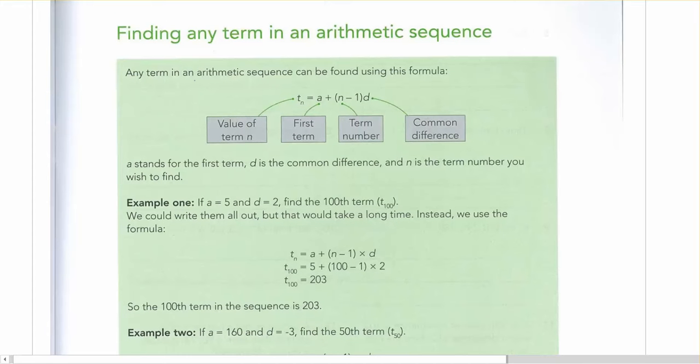Any term in an arithmetic sequence can be found using the formula, and there you see it again. t sub n is equal to a plus bracket n minus 1 bracket d. The parts that we have to identify are just what the different bits in the formula are.